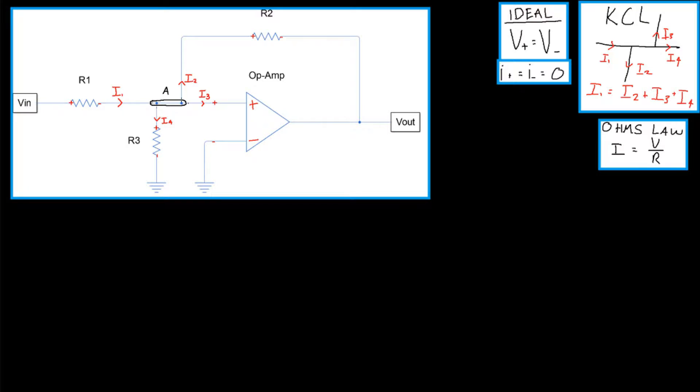In today's video, we're going to tackle an ideal op amp. Before we get started, there's a little bit of background information which you should know. The first is KCL, which is a law that states that the sum of currents entering a node should equal the sum of currents leaving a node.